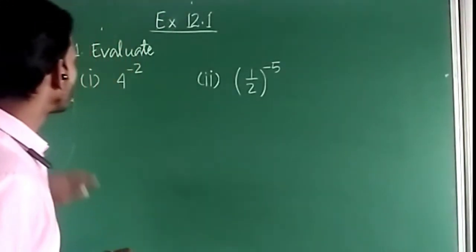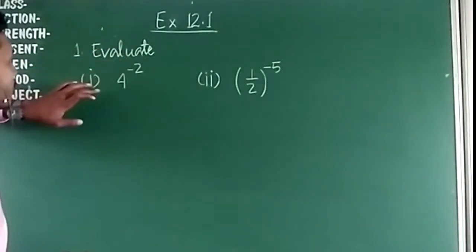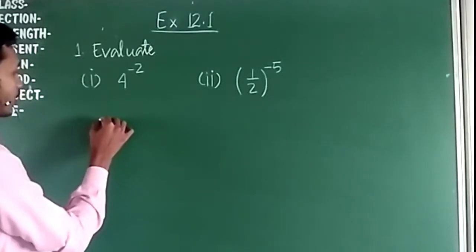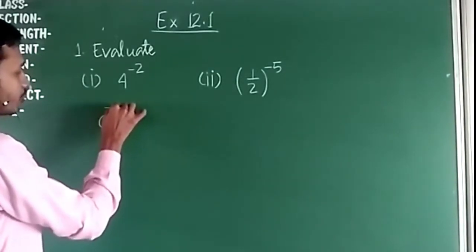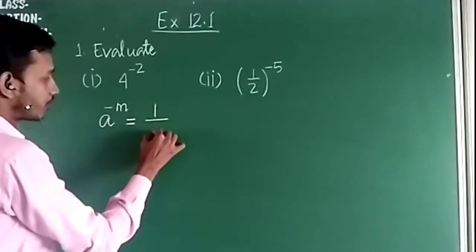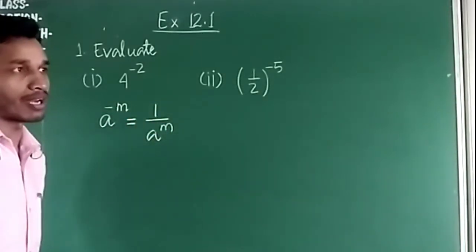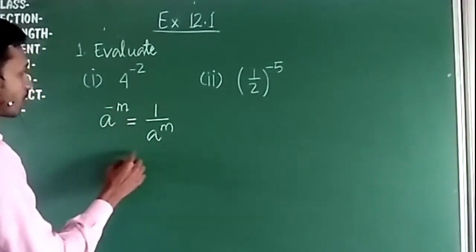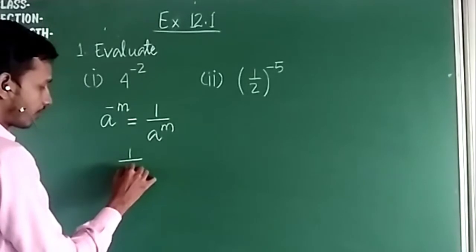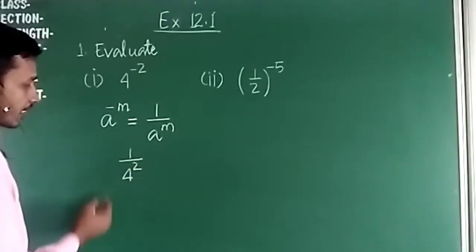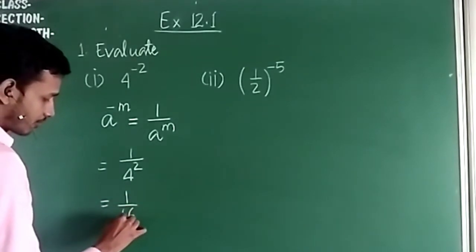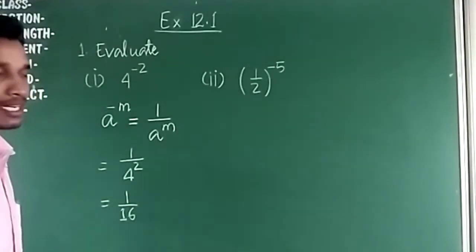The first question is to evaluate 4 to the power minus 2. By the laws of exponents, we know that a to the power minus n is equal to 1 divided by a to the power n. So we write 4 to the power minus 2 as 1 by 4 to the power 2. Now 4 squared is 16, so the answer is 1 by 16.